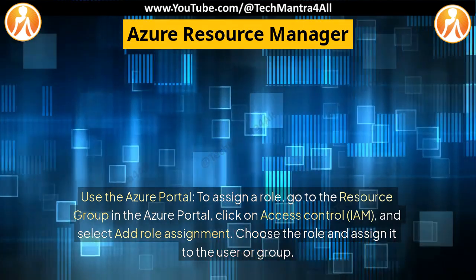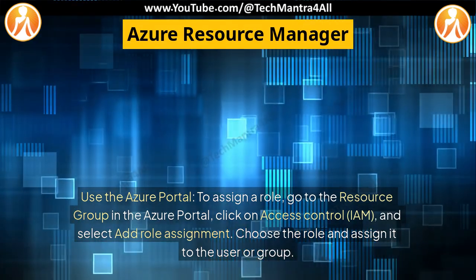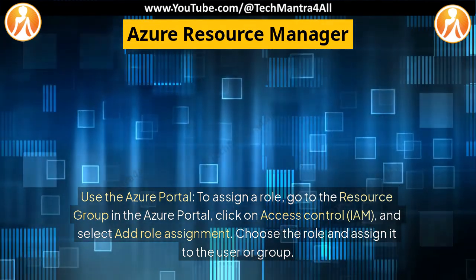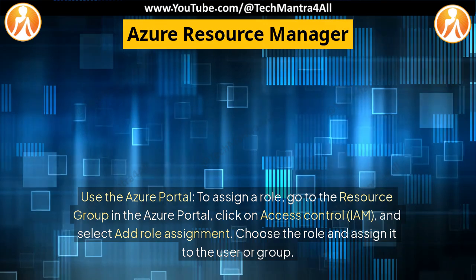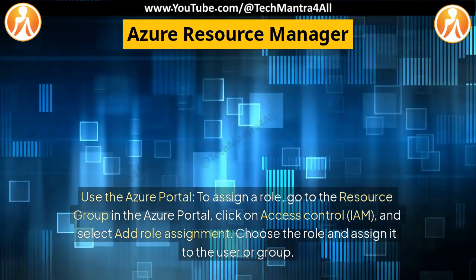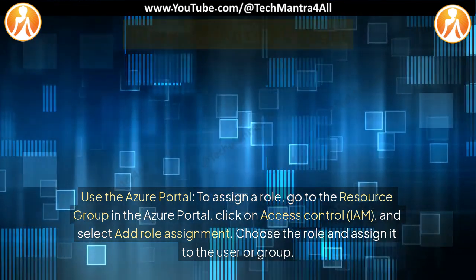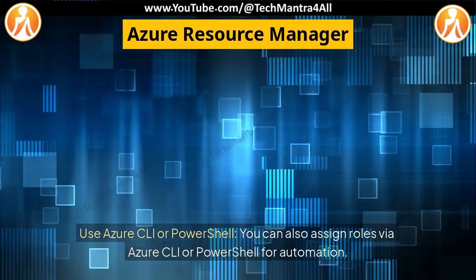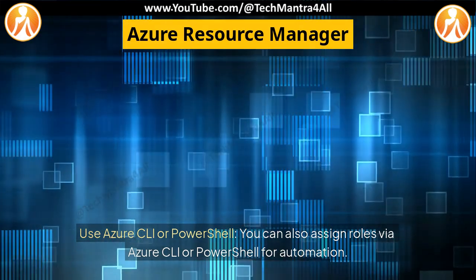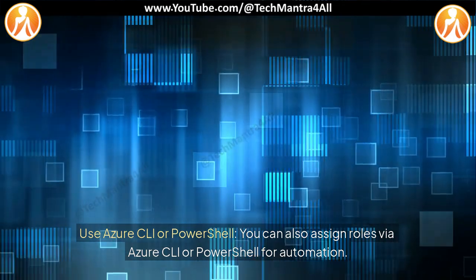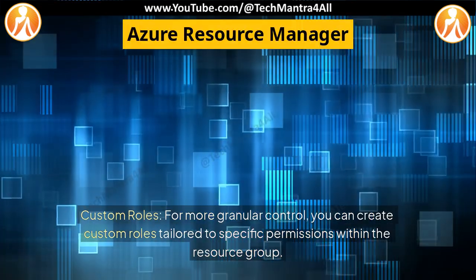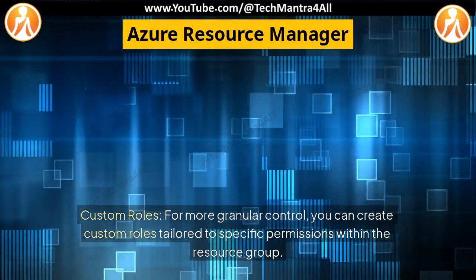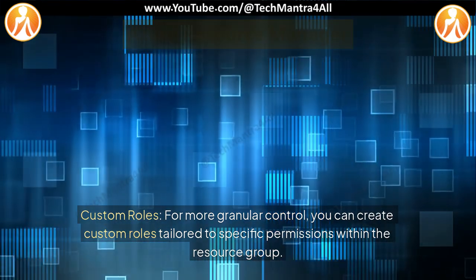Use the Azure portal: to assign a role, go to the resource group in the Azure portal, click on Access Control (IAM), and select Add Role Assignment. Choose the role and assign it to the user or group. Use Azure CLI or PowerShell: you can also assign roles via Azure CLI or PowerShell for automation. Custom roles: for more granular control, you can create custom roles tailored to specific permissions within the resource group.